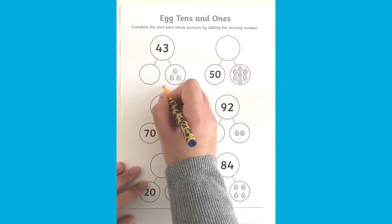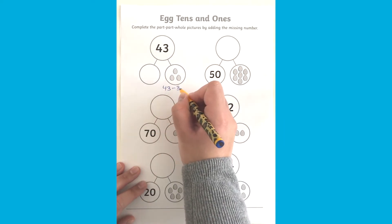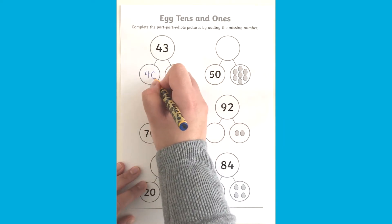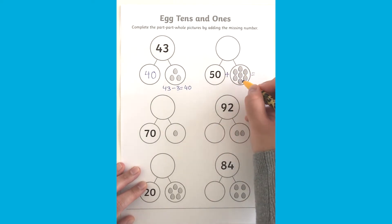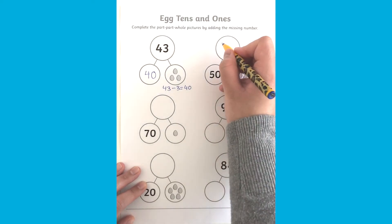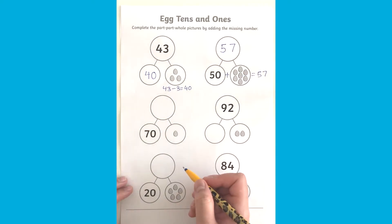This resource is really fantastic in helping children understand place value, the value of each digit in a number. Using our place value knowledge we can then go on to understand the mathematical relationship between these numbers.